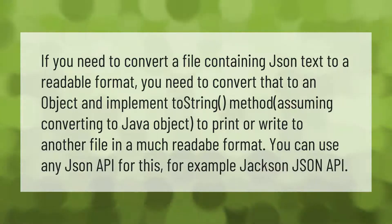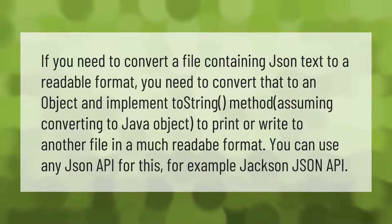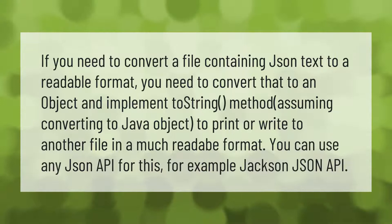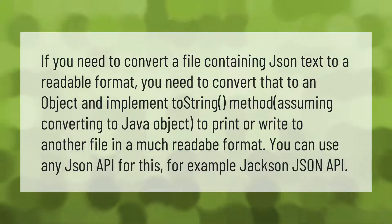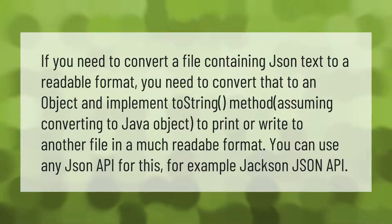If you need to convert a file containing JSON text to a readable format, you need to convert that to an object and implement a toString method. Assuming converting to a Java object to print or write to another file in a more readable format, you can use any JSON API for this — for example, the Jackson JSON API.